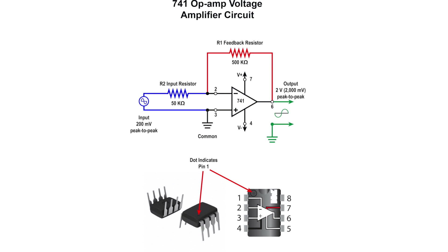Op-amps are connected in different ways to perform different functions. The example shows the op-amp circuit configured as an AC inverting amplifier. Two resistors set the value of the voltage gain of the amplifier. Resistor R2 is the input resistor and R1 is the feedback resistor. The ratio of the resistance value of R2 to R1 sets the voltage gain. The op-amp amplifies the input voltage and inverts its polarity, so the output signal is 180 degrees out of phase with the input signal.